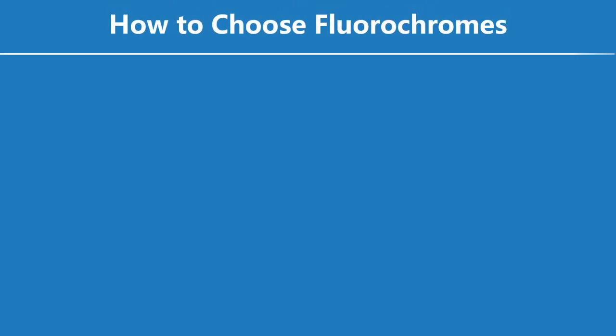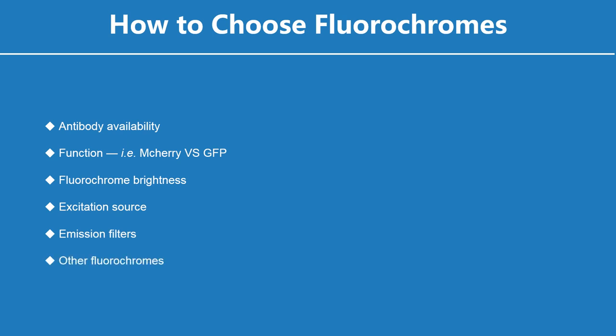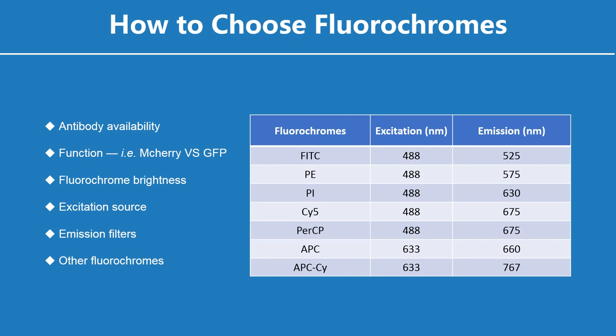Fluorophores enable researchers to create labeled biomolecules for use in immunochemistry, fluorescence in situ hybridization, cell tracing, receptor labeling, and cytochemistry applications, as well as for probing biological structure, function, and interactions. When it comes to flow cytometry, selection should be based on antibody availability, fluorochrome brightness, excitation source, emission filters, and other factors.